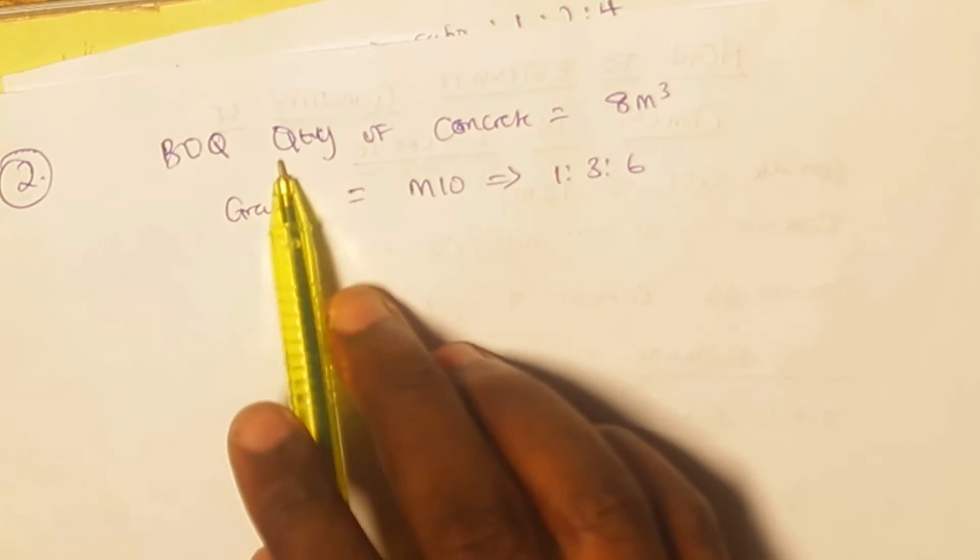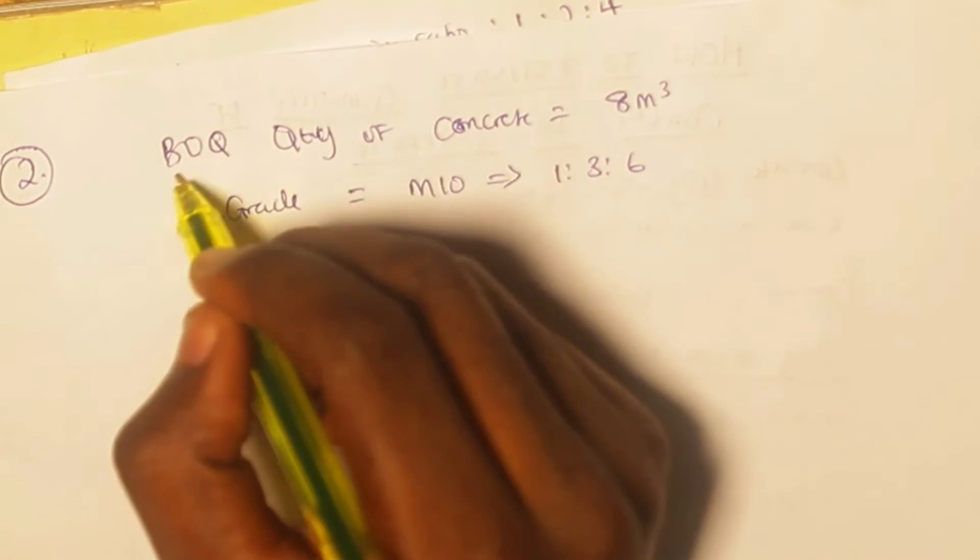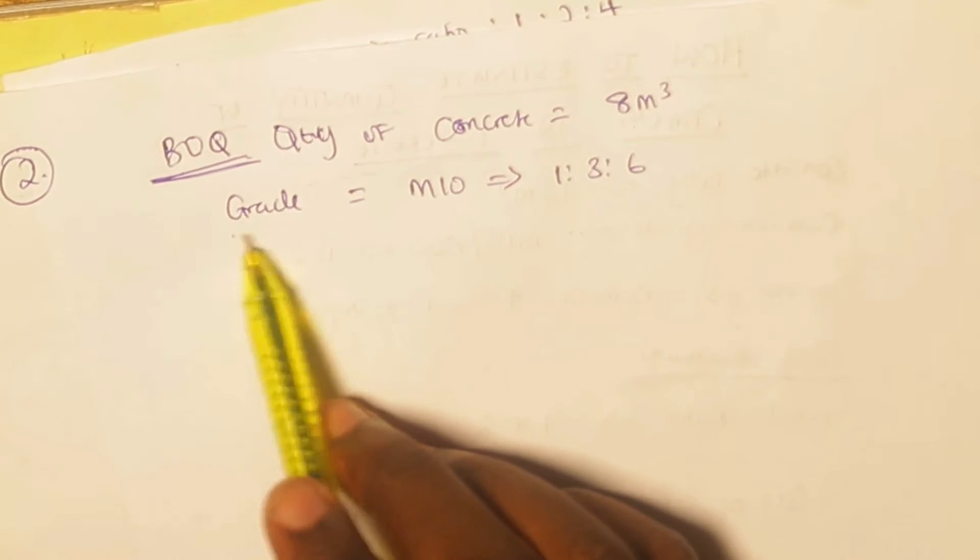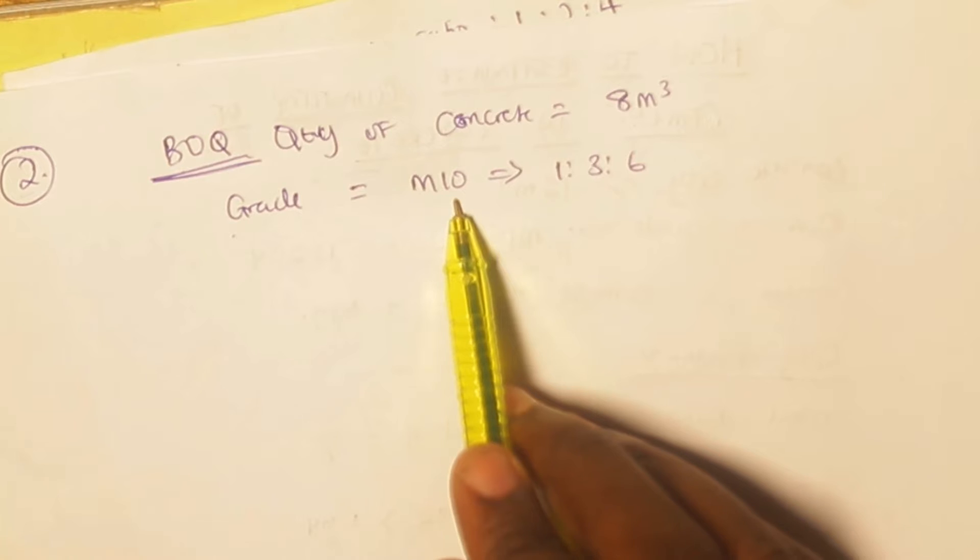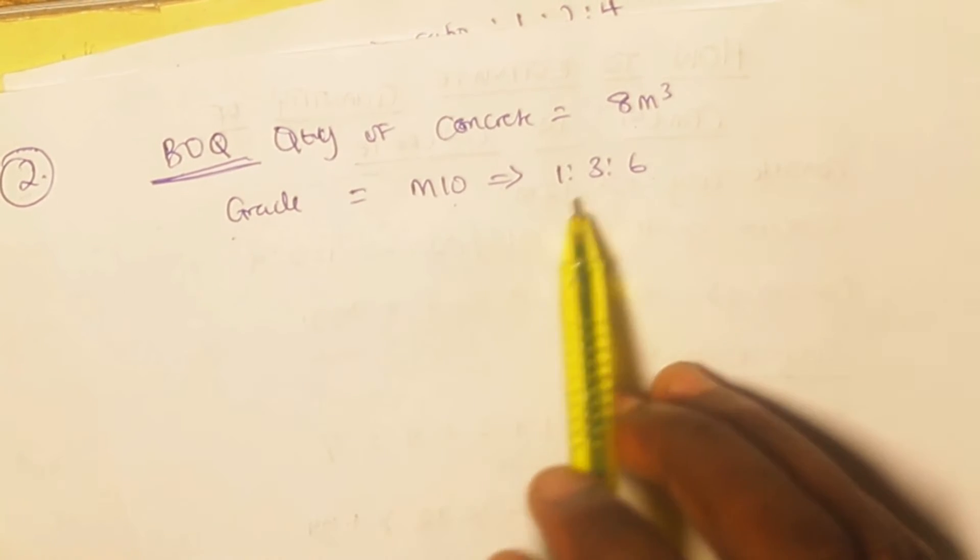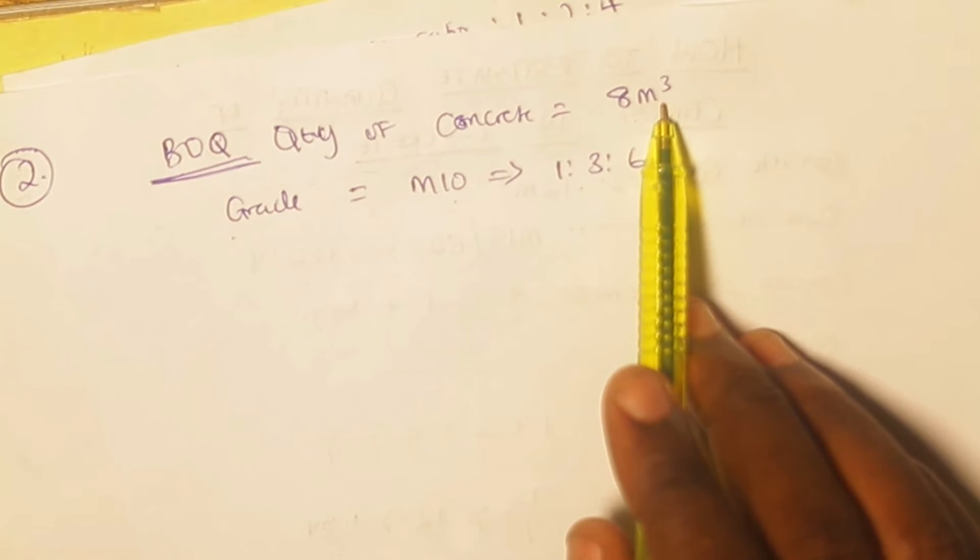Let's say in this example, in our bill of quantities, the quantity of concrete in the BOQ in this case is eight meters cube, and the grade of concrete that is used in this case is M10. So M10 is one ratio three ratio six.